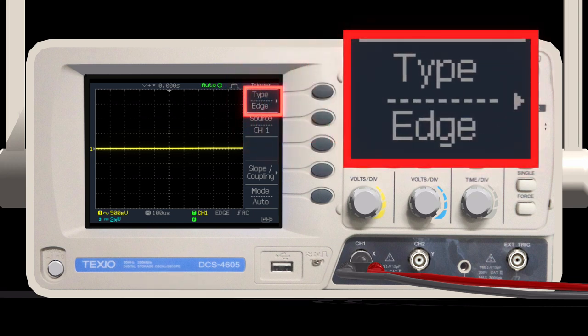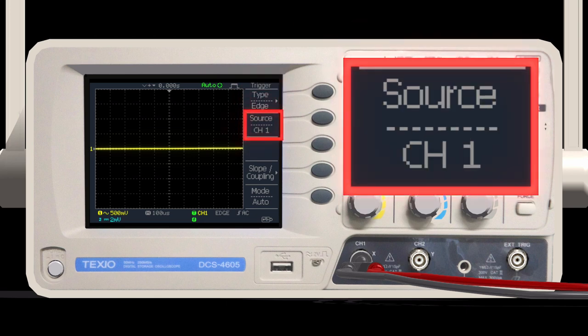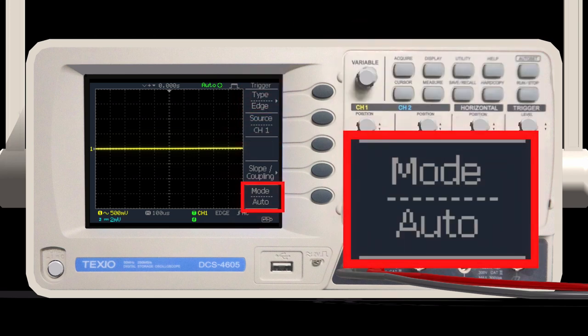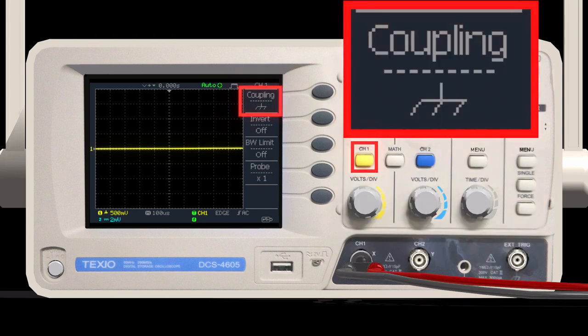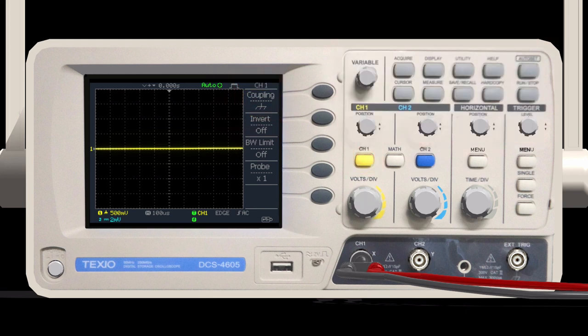The trigger type should be edge. The source is channel 1 this time and the mode is set to auto. First set the coupling to ground and adjust the position of the vertical axis, which corresponds to the voltage of 0 volts. 0 volts is the reference voltage for electrical signals.